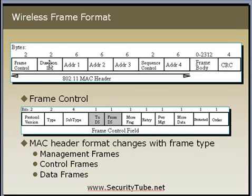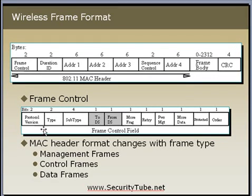Let's go ahead and see what all these MAC header fields contain and what they mean. The first two bytes are taken by the Frame Control field. Frame Control consists of several subfields. The first two bits are the Protocol Version — currently IEEE 802.11 uses protocol version 00, so these two bits will contain 00.